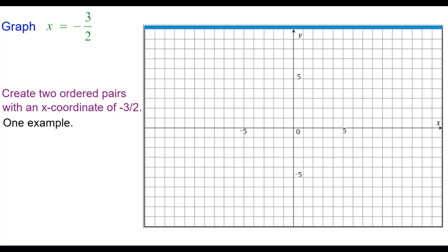One example of two ordered pairs would be negative 3 halves comma 0, and negative 3 halves comma 4. Notice we like to use the x-intercept when at all possible.